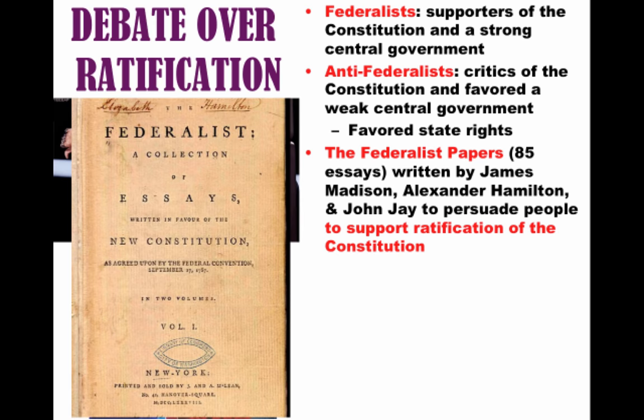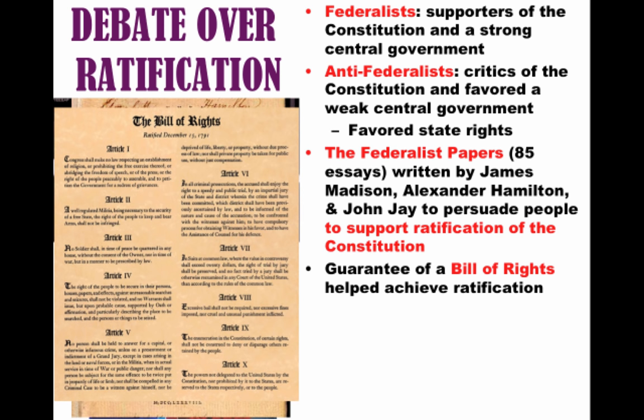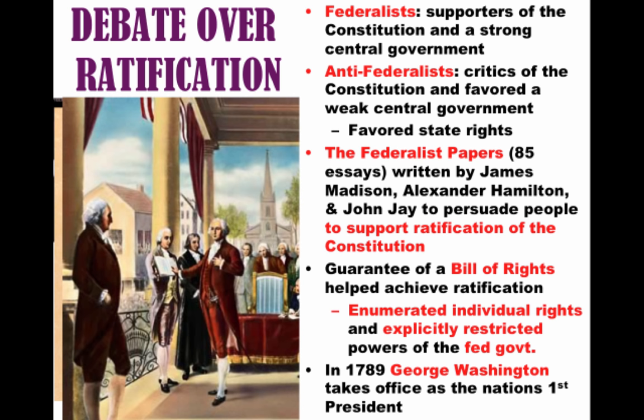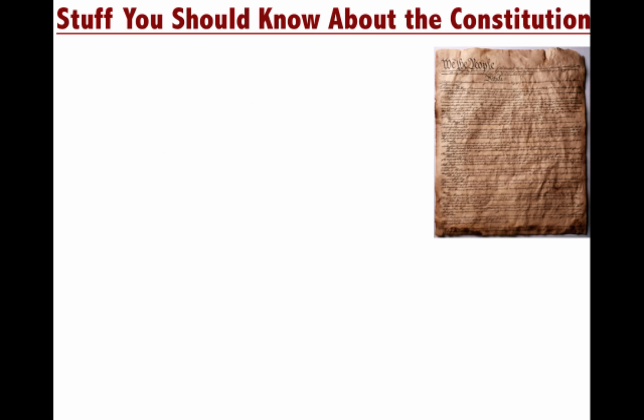You do have people trying to convince those who did not want ratification, and you can see this in the Federalist Papers — 85 essays largely written by James Madison and Hamilton, with some by John Jay, designed to persuade people to support ratification of the Constitution. Eventually, what helped get enough Anti-Federalists to support ratification was the guarantee that a Bill of Rights would be added to the Constitution. These first ten amendments would enumerate and spell out specifically individual rights and explicitly restrict the powers of the federal government.